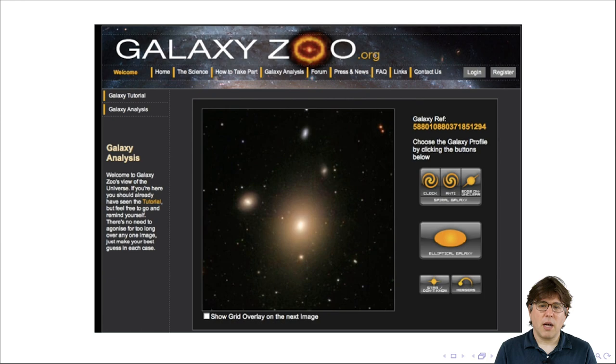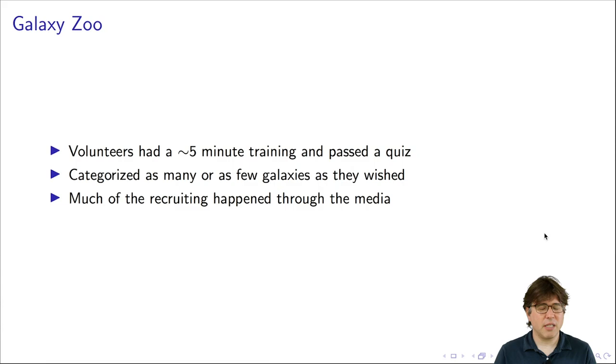Schawinski talked this over with a fellow student named Chris Lintott, and then they created this website, galaxyzoo.org, where volunteers could come, see a picture of a galaxy, and then classify it using the classification options here, whether it's, for example, a spiral or elliptical galaxy. You may think, isn't it hard to classify galaxies? And it turns out you don't really need to be a graduate student in astronomy to be able to do it. They gave volunteers about a five-minute training, and then had a quiz for them, and they found that with five minutes of training, many people are actually able to do these classifications quite well. Volunteers could classify as many or as few galaxies as they wished, and much of the recruiting of these volunteers happened through the media coverage of the project.